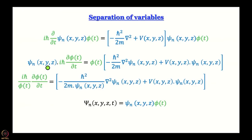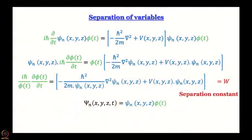After dividing by the wave function on both sides, the left-hand side becomes purely in terms of time and the right-hand side purely in terms of spatial coordinates. Since the left-hand side depends on time and the right-hand side depends on space, and they are equated, both sides must be constants. This constant W is called the separation constant.